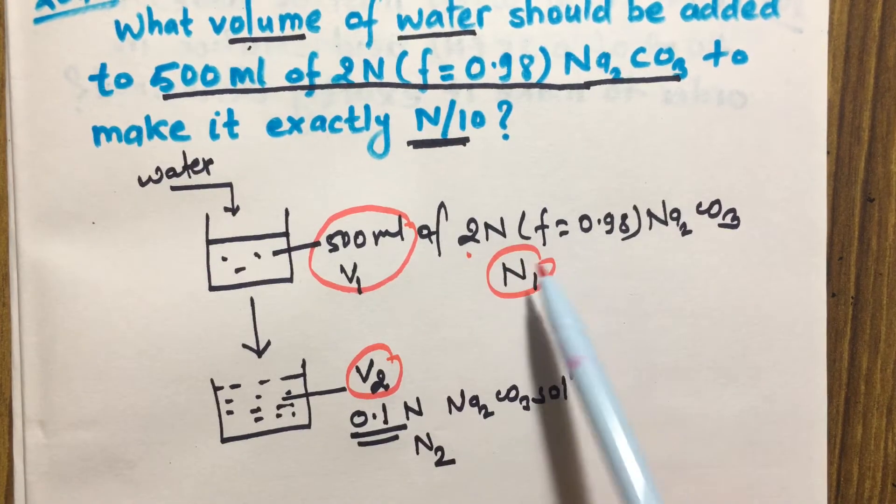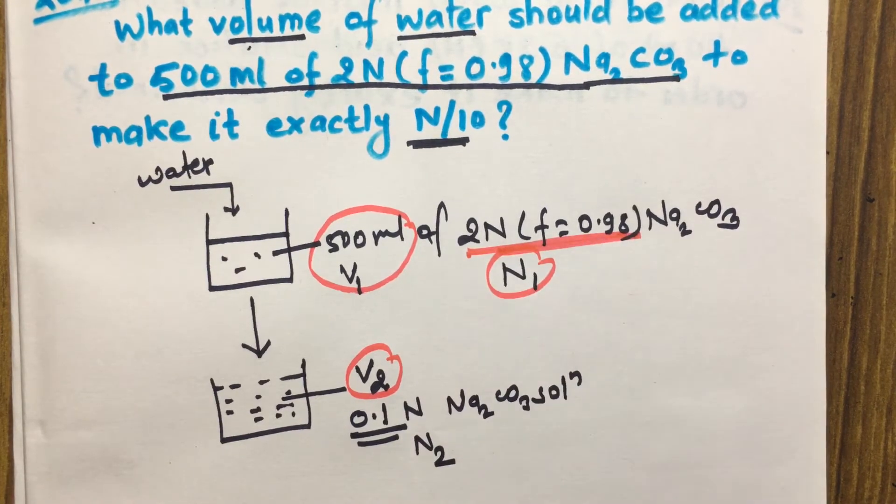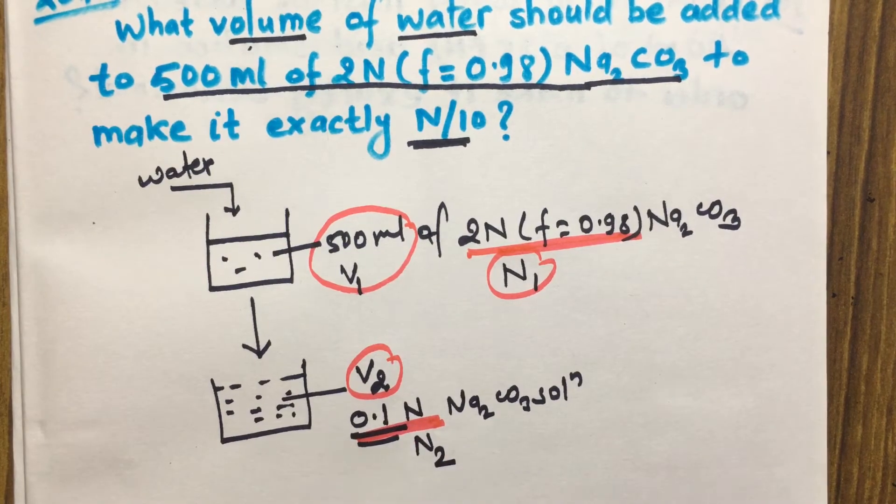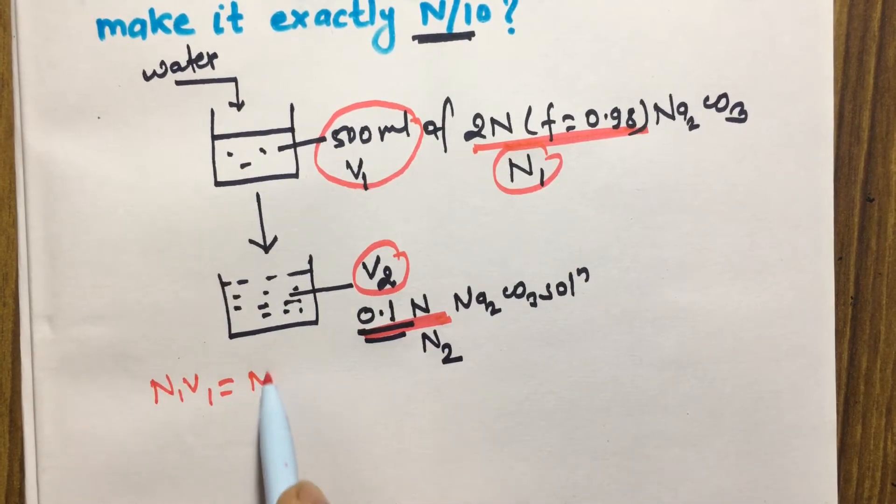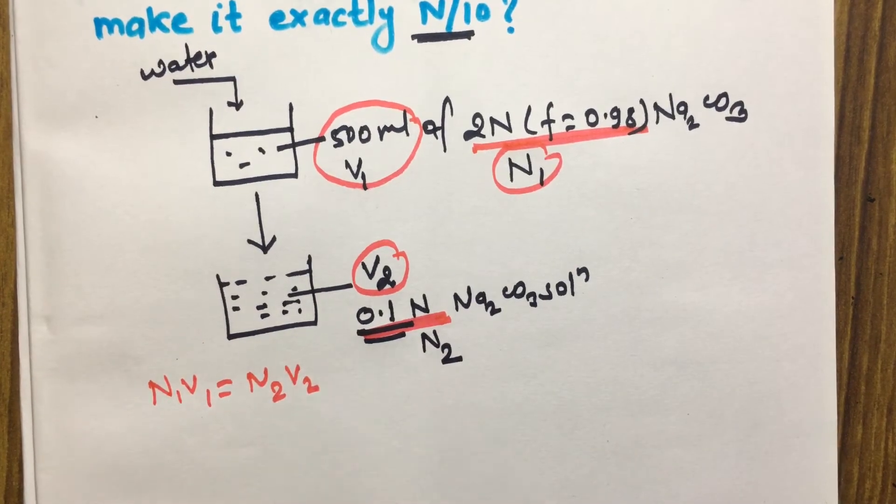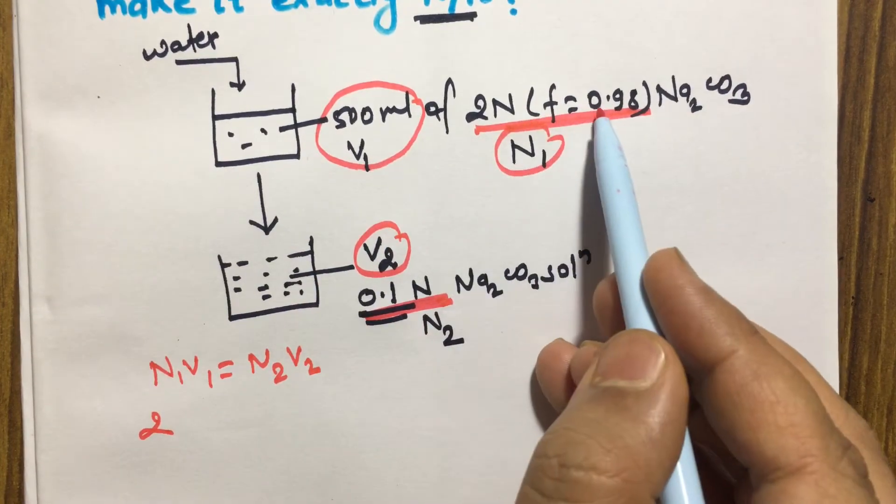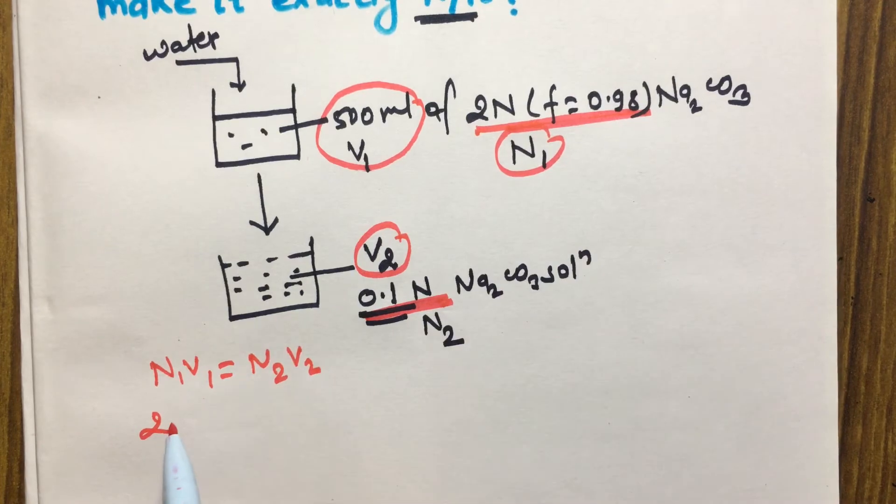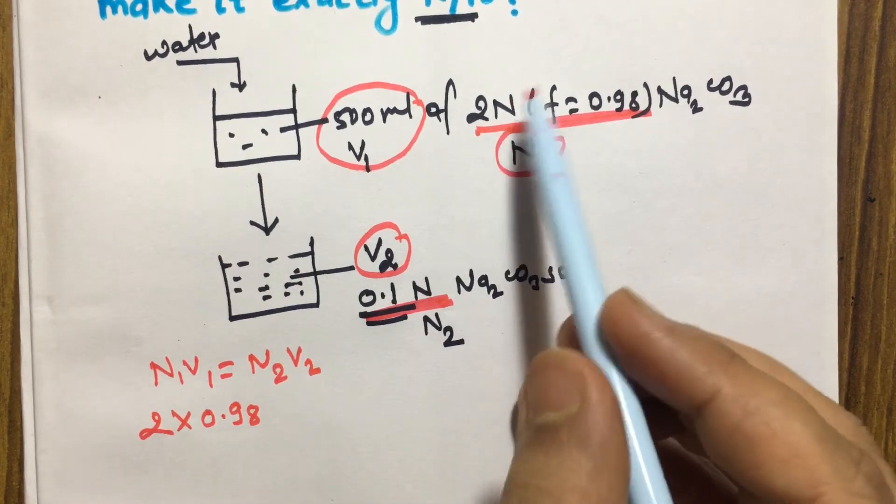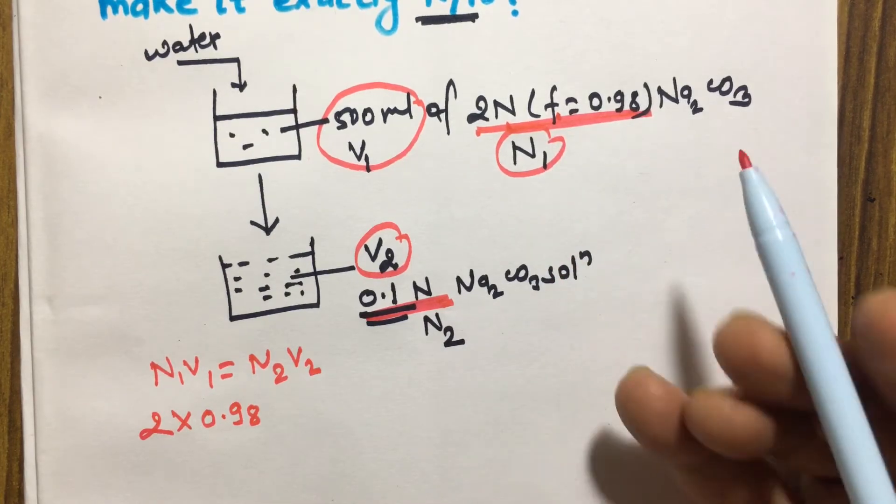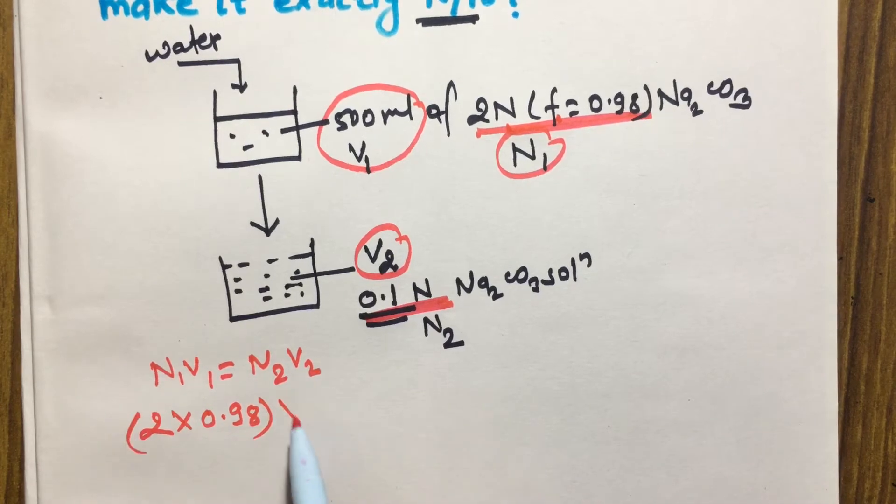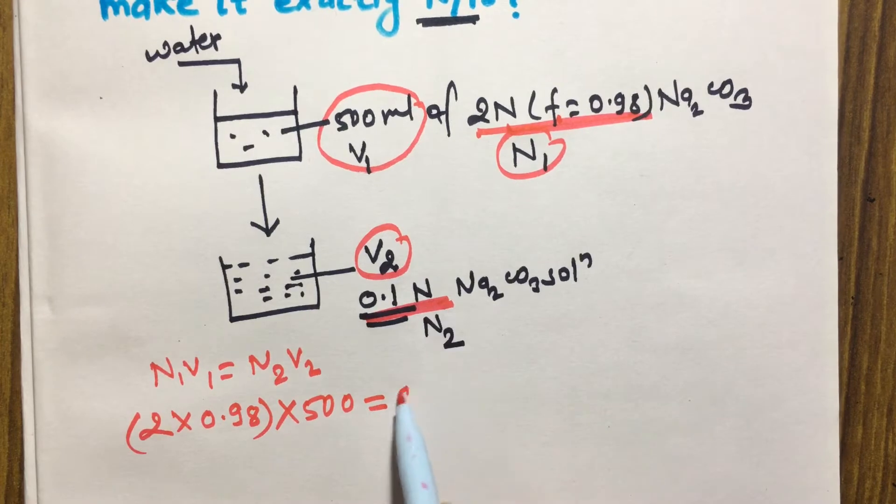We have to make 500 ml to V₂ such that this concentration becomes N₂. Therefore using the formula N₁V₁ equals N₂V₂, so here N₁ is 2 and factor is 0.98, so actual normality becomes 2 × 0.98 because normality and factor can be multiplied to get the actual concentration of solution. V₁ is 500, N₂ is 0.1, and V₂ is to be calculated.